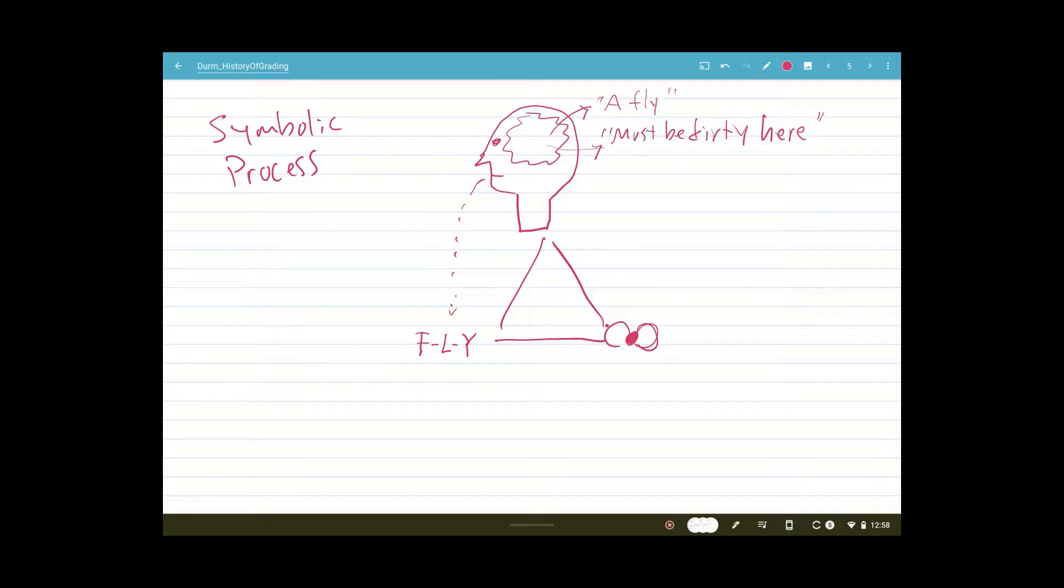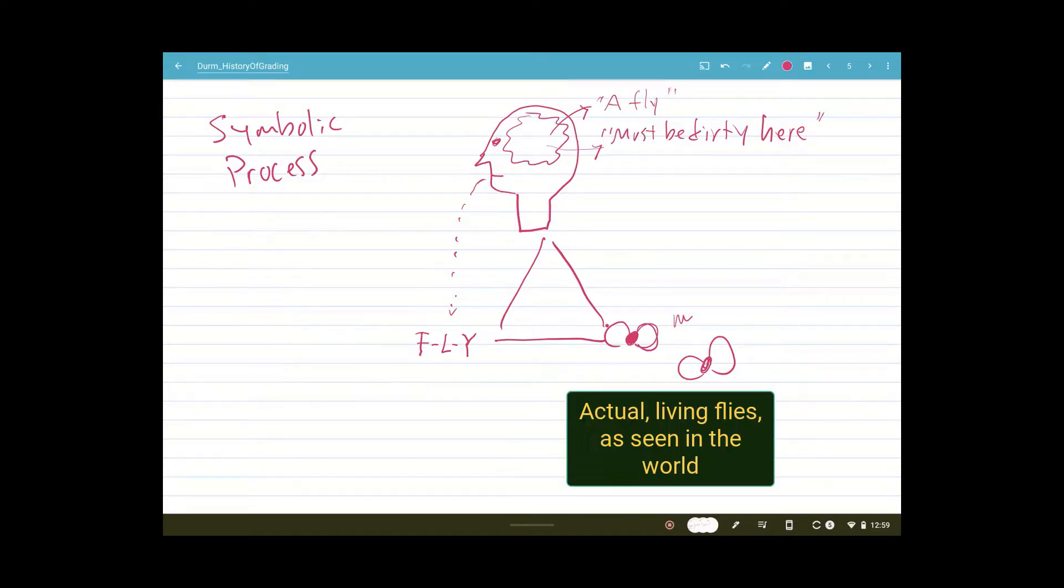So you kind of have this symbolic process here. And so maybe down here, this is just an X. This is probably the best drawing of a fly I have ever seen. So then we have drawn like flies, right? Actual flies in the world. And maybe that's fly one, fly two.